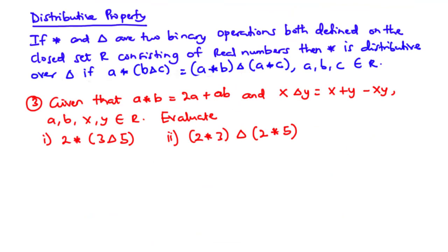Now let's move on to the distributive property. For the distributive property, if star and delta are two binary operations both defined on the closed set of real numbers, then star is distributive over delta if A star (B delta C) is equal to (A star B) delta (A star C), where A, B, and C are all members of the set R. If the left hand side is equal to the right hand side, we say that star is distributive over delta.